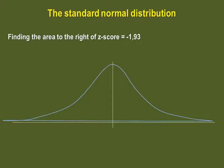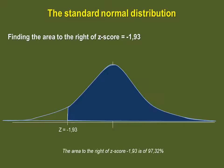Now it's your turn again. Try finding the area to the right of Z-score minus 1.93. That's correct. The area to the right of Z-score minus 1.93 is 97.32%.